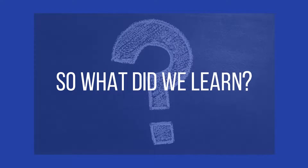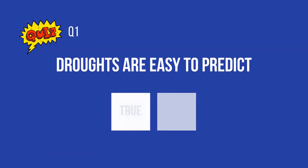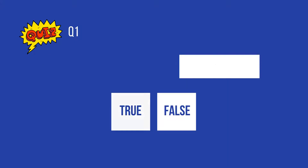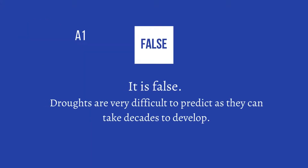So what did we learn? Let's try a quiz. Question 1: Droughts are easy to predict — true or false? The answer is false. Droughts are very difficult to predict as they can take decades to develop.